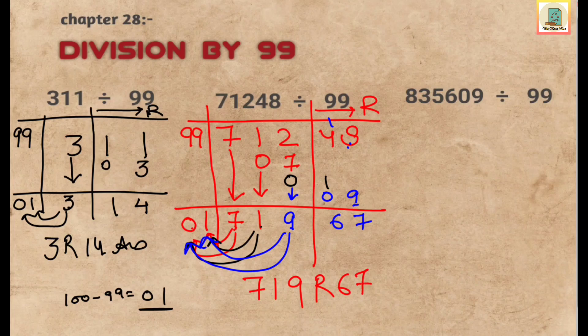Now let's take one more example, a bigger number to understand this concept. It'll be 835609. Leave the two digits from the right and put the partition. This part will be the remainder part, and here we'll write the number that is 99. So here we'll write the complement that is 01.